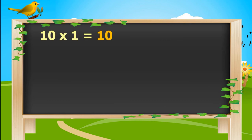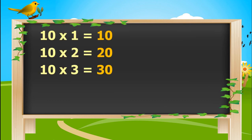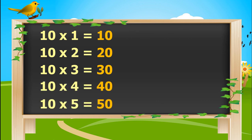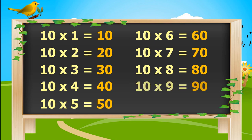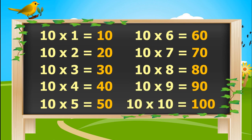10 ones is 10. 10 twos are 20. 10 threes are 30. 10 fours are 40. 10 fives are 50. 10 sixes are 60. 10 sevens are 70. 10 eights are 80. 10 nines are 90. 10 tens are 100.